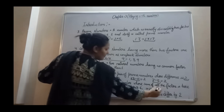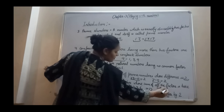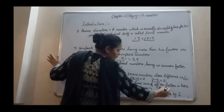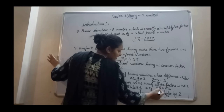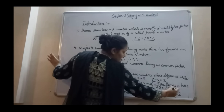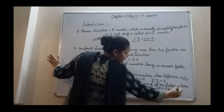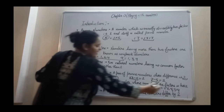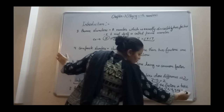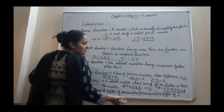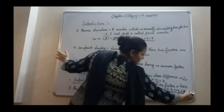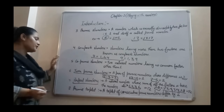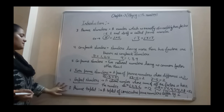Another example is 28, which is also a perfect number. The factors of 28 are 1, 2, 4, 7, 14, and 28. When you add them all you get 56, which is twice of 28. So 28 is also a perfect number.